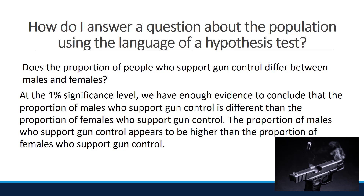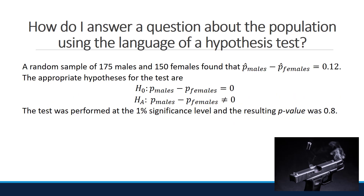Notice we stated the 1% significance level — whenever reporting the results of a hypothesis test, we want to make sure we state what the significance level was, as it represents the allowable amount of error in the hypothesis test. We can further say the proportion of males who support gun control appears to be higher than the proportion of females based on the information in the sample. Your turn: read the next two prompts in the script and see if you can write out what the conclusion in context should be. When you come back, we'll look at the answers together.